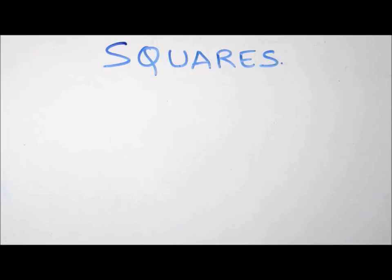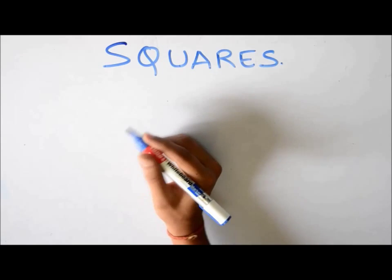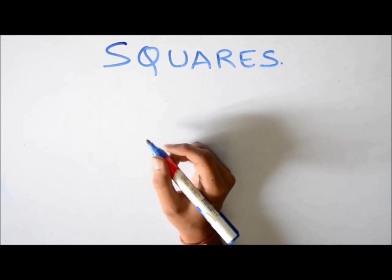Hello everyone. In this lecture we'll see some techniques to find the squares of a number which will reduce the time drastically to calculate the squares. Calculating squares by conventional methods takes a lot of time. It's easy but time-consuming, and in CAT you have to reduce the time taken. So in this lecture we'll see how we can calculate the squares in maybe 5 to 10 seconds.